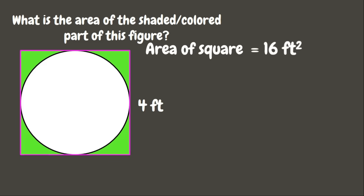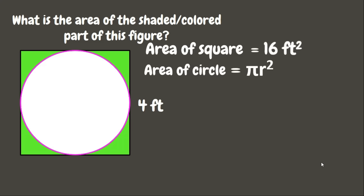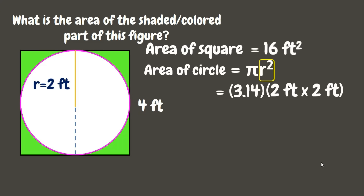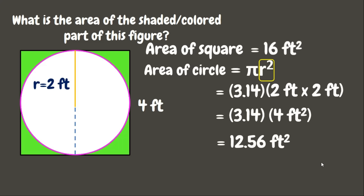Next, let's get the area of the circle. The formula for the area of the circle is π r². We use π = 3.14. The diameter of the circle is 4 feet, so the radius is 2 feet. We calculate 3.14 times 2² — which is 3.14 times 4 square feet — giving us 12.56 square feet as the area of the circle.